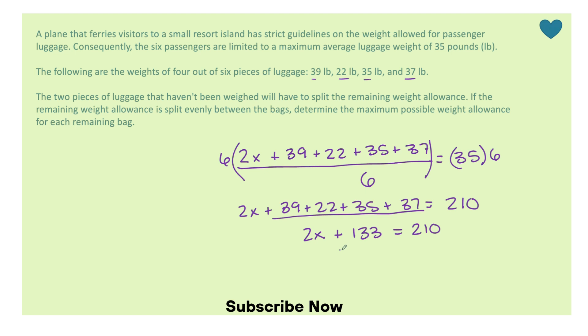Now I'm going to subtract 133 from both sides. So I have 2x equals 210 minus 133. So I have 77 pounds that is left over.